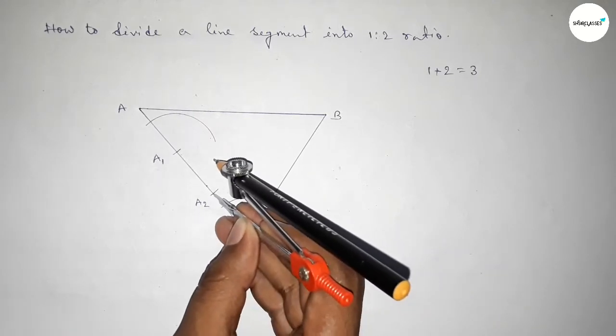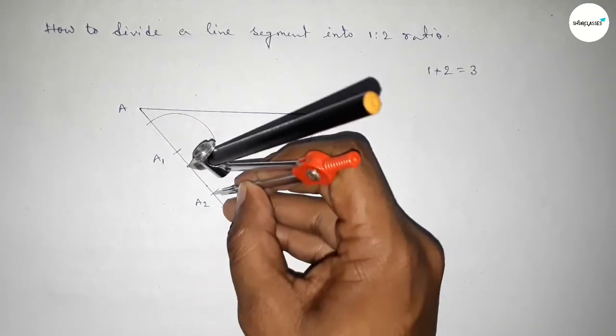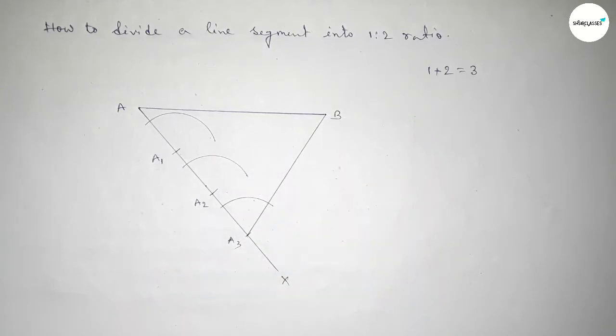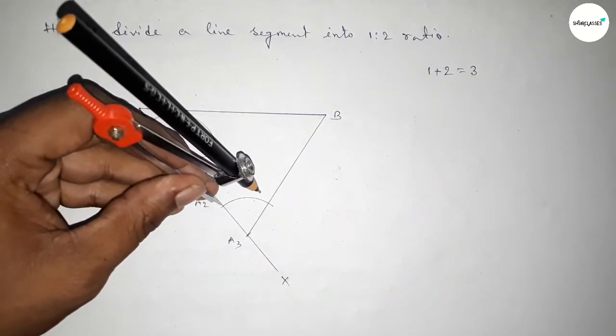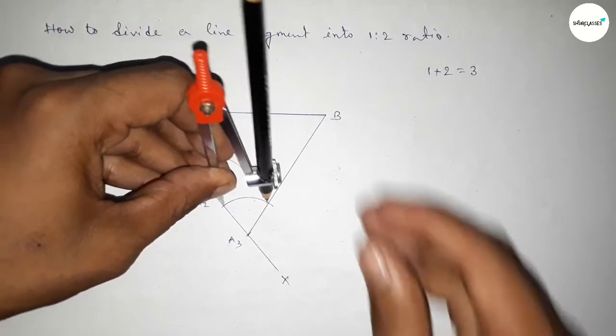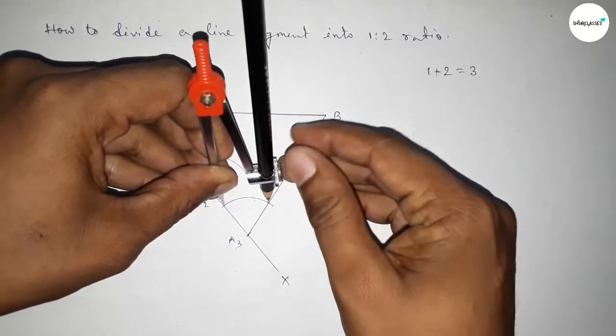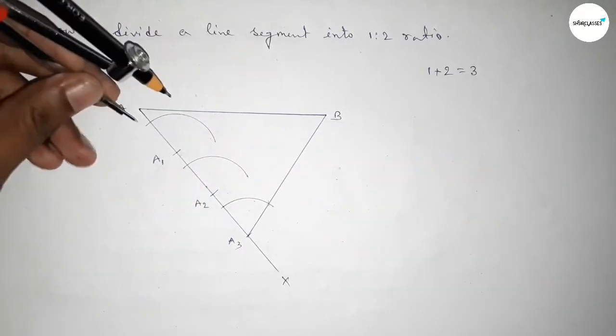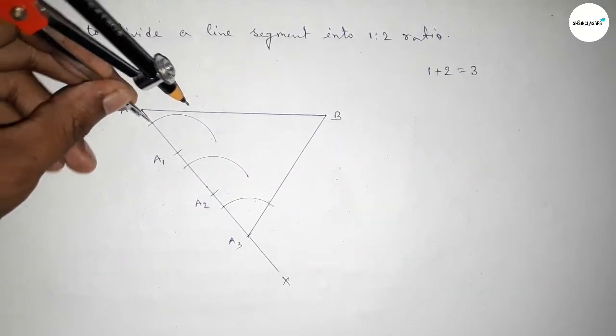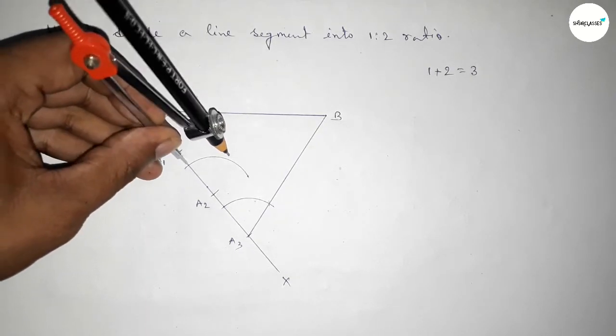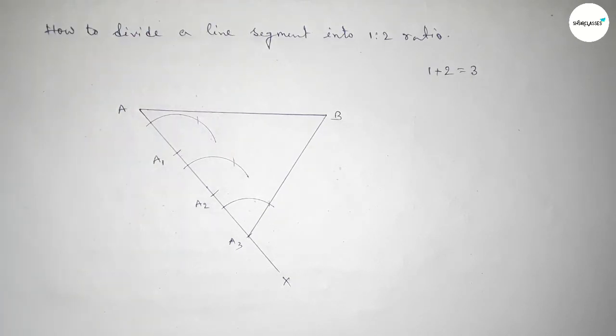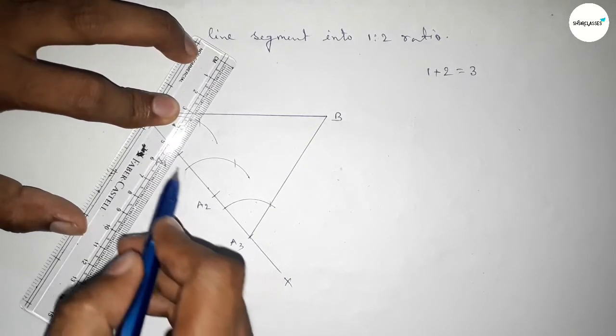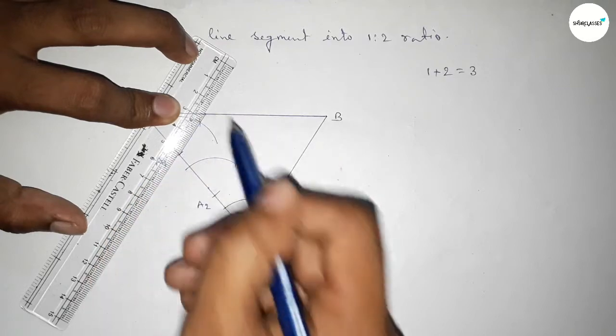Similarly, putting the compass on the point A2 and drawing here an arc. Similarly, now taking the length from this point to this point by this way, putting the compass here and cutting here, putting the compass here and cutting here. Now first joining A1 and this intersecting point.